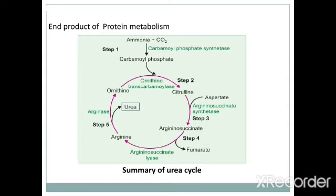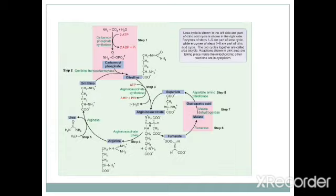The fourth step is the formation of arginine — arginosuccinate is cleaved by arginosuccinate lyase to form arginine and fumarate. The final step is the hydrolysis of arginine to urea and ornithine by the enzyme arginase. Ornithine then returns to the mitochondria to react with another molecule of carbamyl phosphate, completing the cycle.